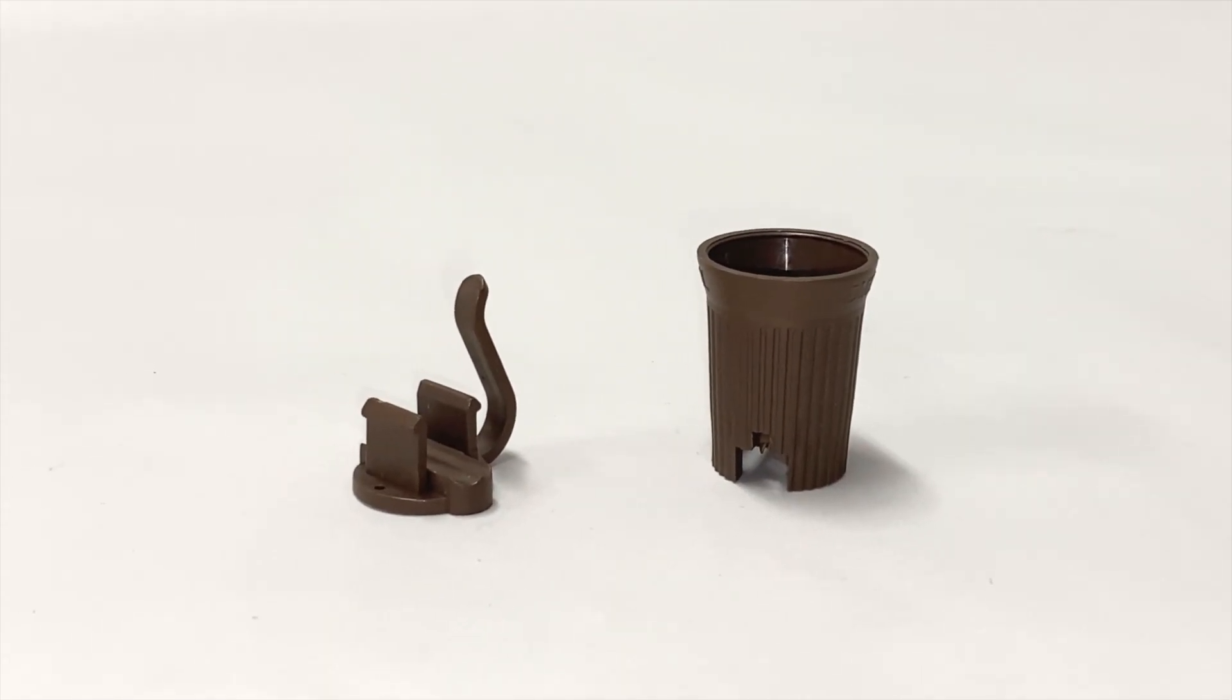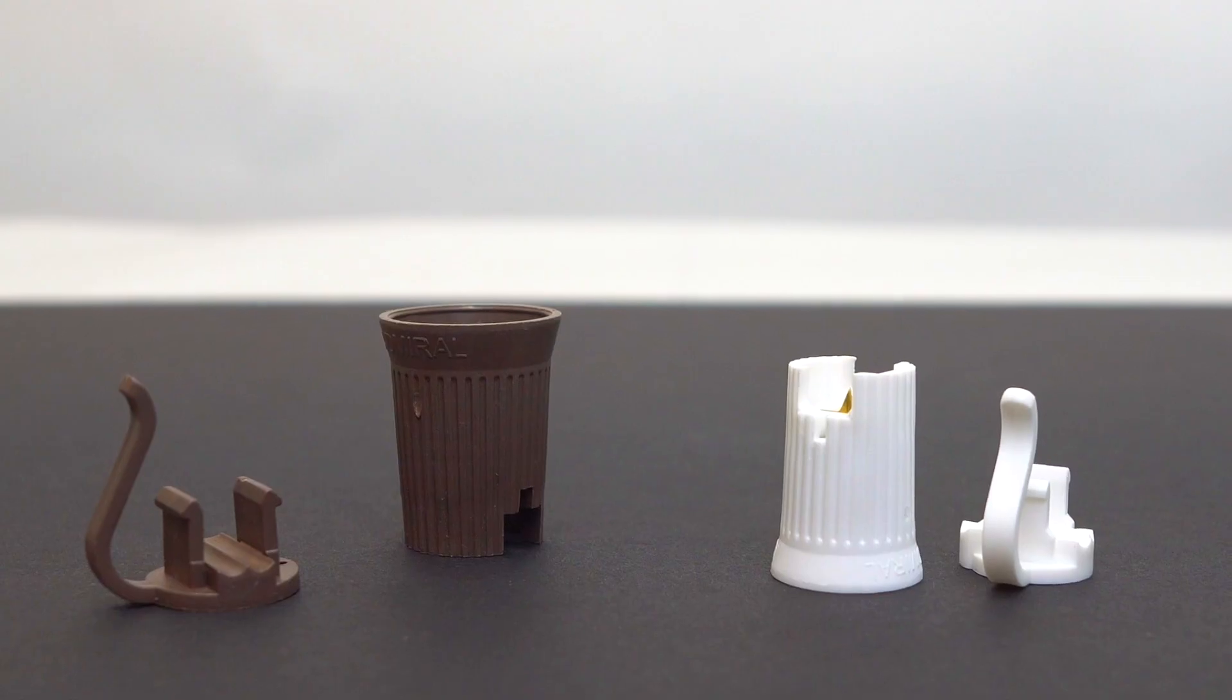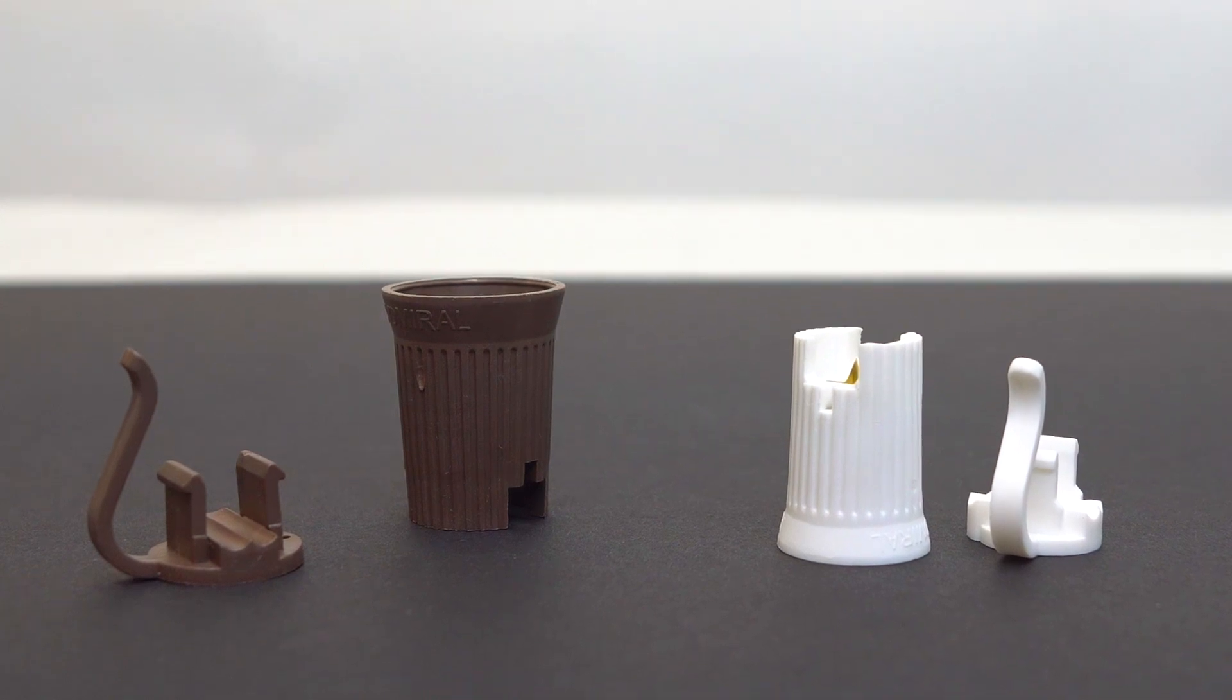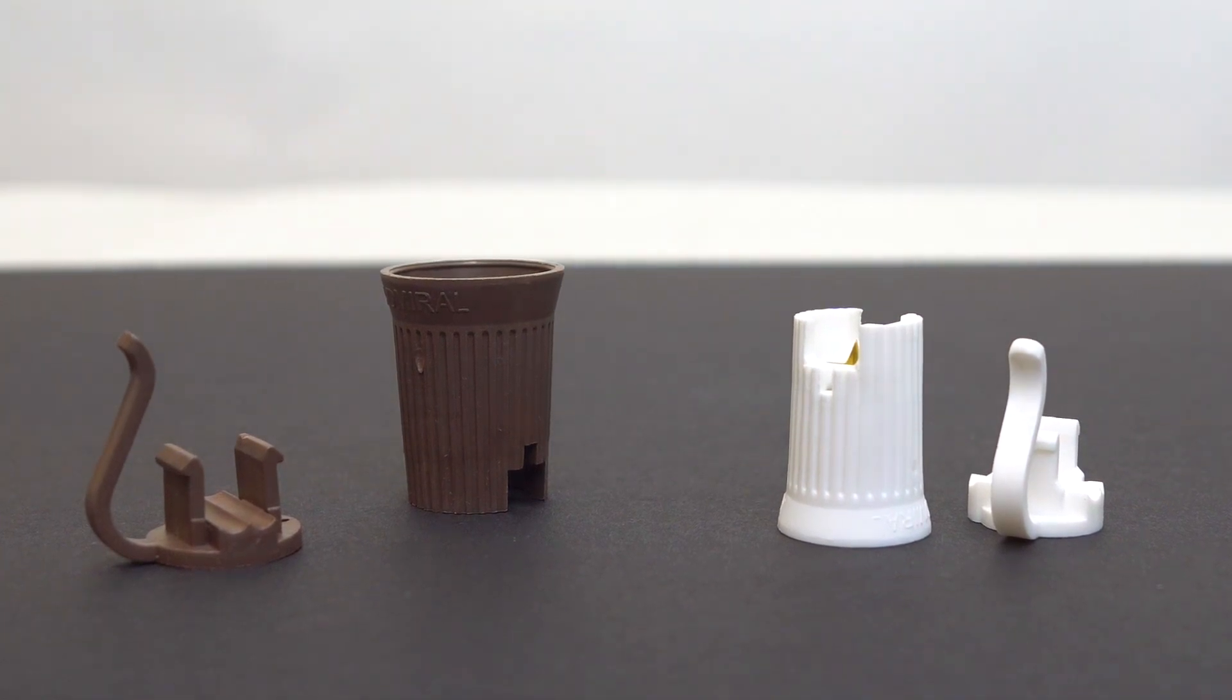In this short instructional video, we will be demonstrating how to remove and replace a malfunctioning C9 or C7 socket on SB2 wire. Today, Heather is going to demonstrate just how to do that.